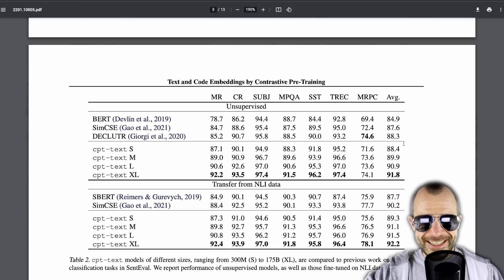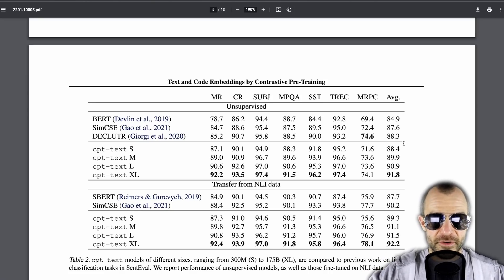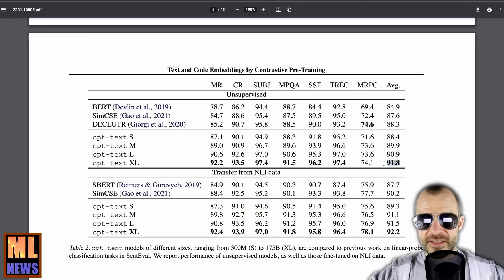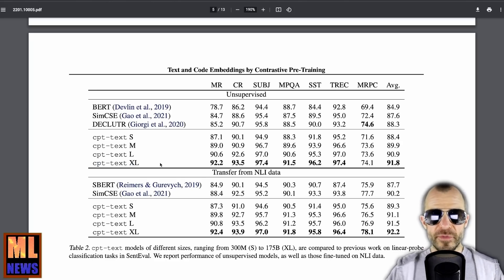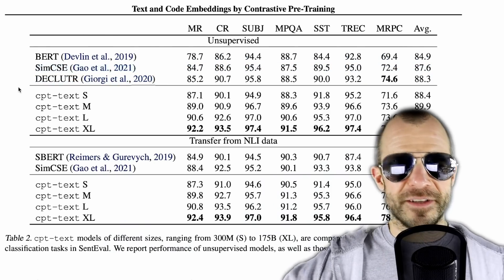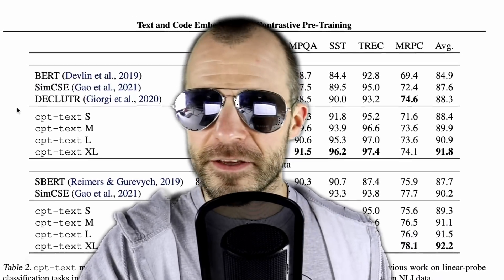Looking at the paper's results more carefully, we see the first scratches in what people are now saying about this model — namely that it doesn't seem to perform that well. While the average results from their extra-large models do outperform other things, it's very often not by that much. And if you look at selected tasks, it's not even clear they're the best model. They also seem to compare to quite outdated baselines — some papers from 2021. And last I checked, it's 2022. So, OpenAI, get your crap in order.